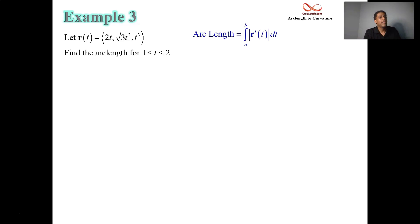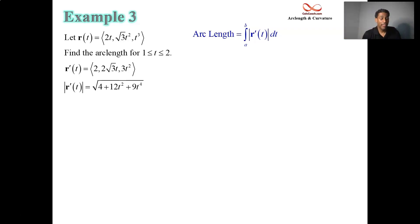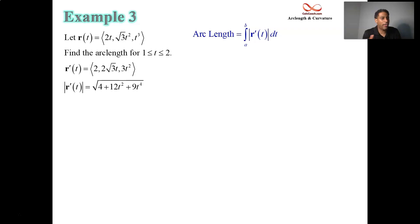We start with the derivative. The i component's derivative is 2, the j component's derivative is 2 root 3 times t, and the k component's derivative is 3t squared. Squaring each component: 4, then squaring 2 root 3 gives 12 — don't forget to square the t to get 12t squared — and squaring 3t squared gives 9t to the fourth. We take the square root of the sum of these, which gives the formula for speed. If we try to integrate in this current form, we'll run into trouble finding the antiderivative.